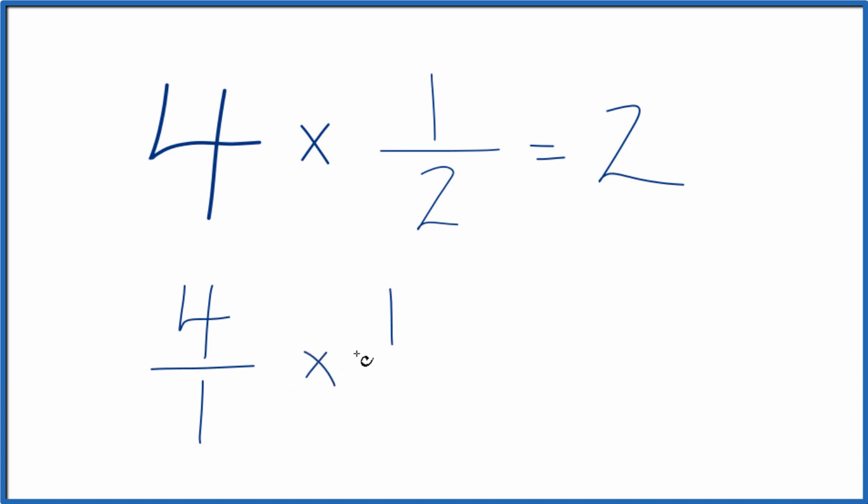Multiply that times 1 half. And when you multiply fractions, you multiply the numerators, then the denominators. Four times one is four. One times two is two. We get four over two.